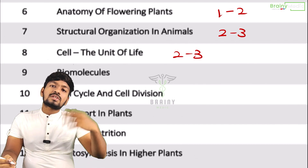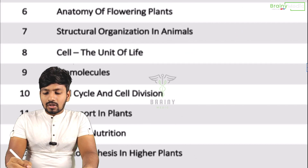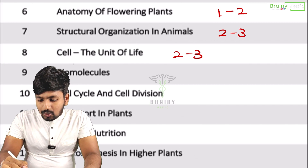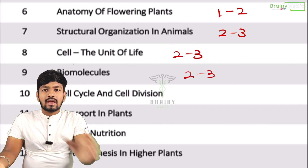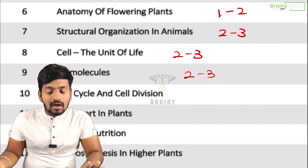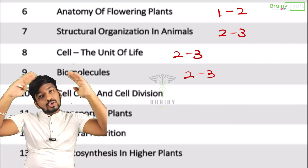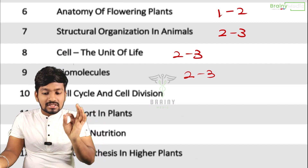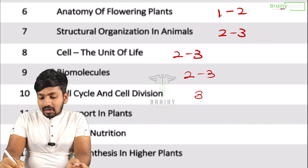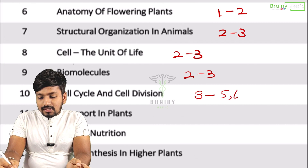Biomolecules — once upon a time there were five questions, but now it's weighted around three questions. Cell division is very weighted. In the last three years, there have been up to six questions from this single lesson — three to six questions.